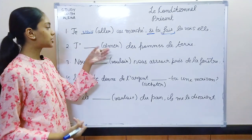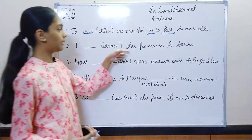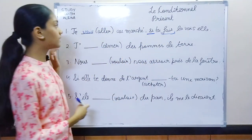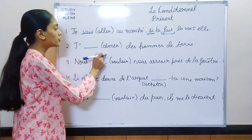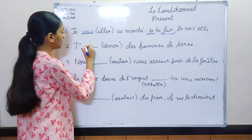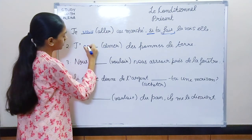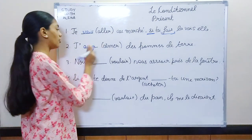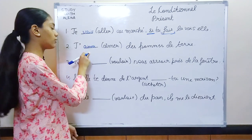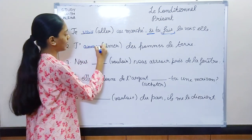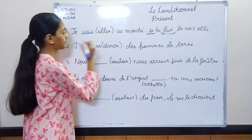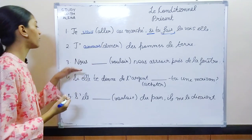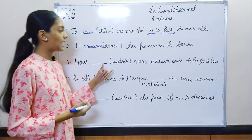Second: je dash aimer des pommes de terre — do this in conditional present. So aimer in future simple is aimer, plus the ending of imparfait. Answer: j'aimerais.